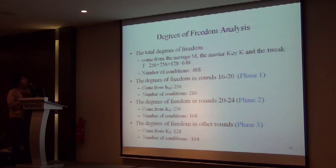Now we give the analysis of the degree of freedom. The total degree of freedom comes from the message, the master key, and the tweak. They are altogether 640 bits. The number of conditions in our 32-round differential path is 488. So it's enough to carry out the attack.